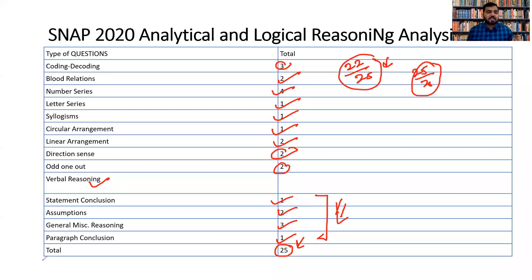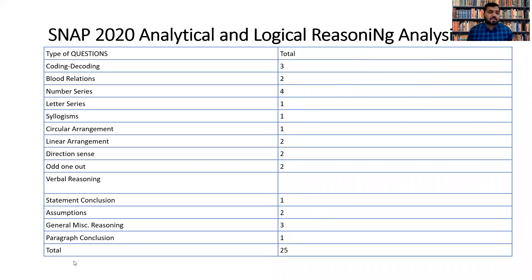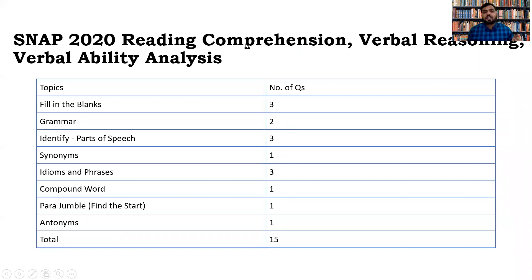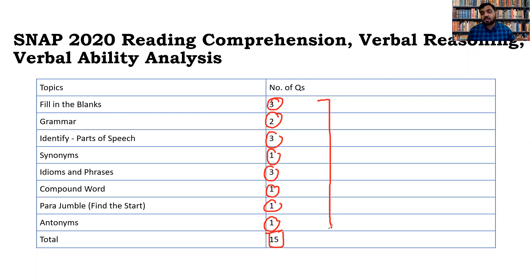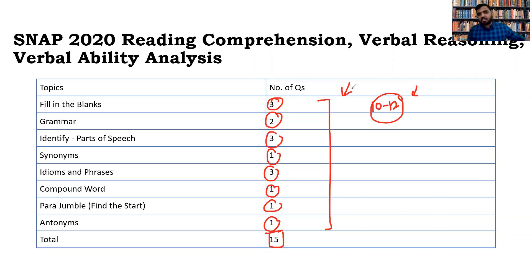For the VARC section in SNAP 2020: 3 Fill in the Blank questions, 2 Grammar, 3 Parts of Speech, 1 Synonym, 1 Idioms and Phrases, 3 One Word/Compound Word, 1 Para Jumbles, and 1 Reading Comprehension — 15 questions total with no heavy RC. These questions are quite easy to attempt and 10 to 12 minutes is more than sufficient for the complete verbal ability section. Know what topics are coming and prepare accordingly.